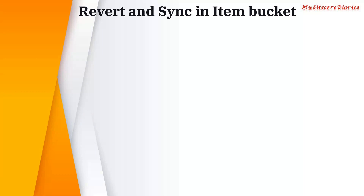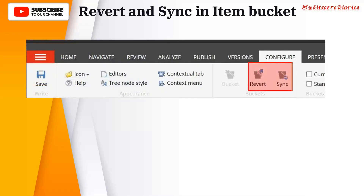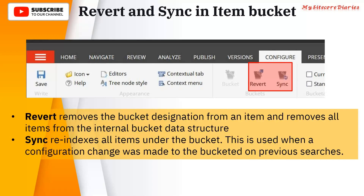There are two important features in item buckets: Revert and Sync. Revert removes the bucket designation from an item and removes all items from the internal bucket data structure — essentially it reverses the bucket. Sync re-indexes all items under the bucket, syncing them with the indexes. Sync is used when a configuration change was made to a bucketed item or bucket. These are the two very important functionalities used in item buckets.